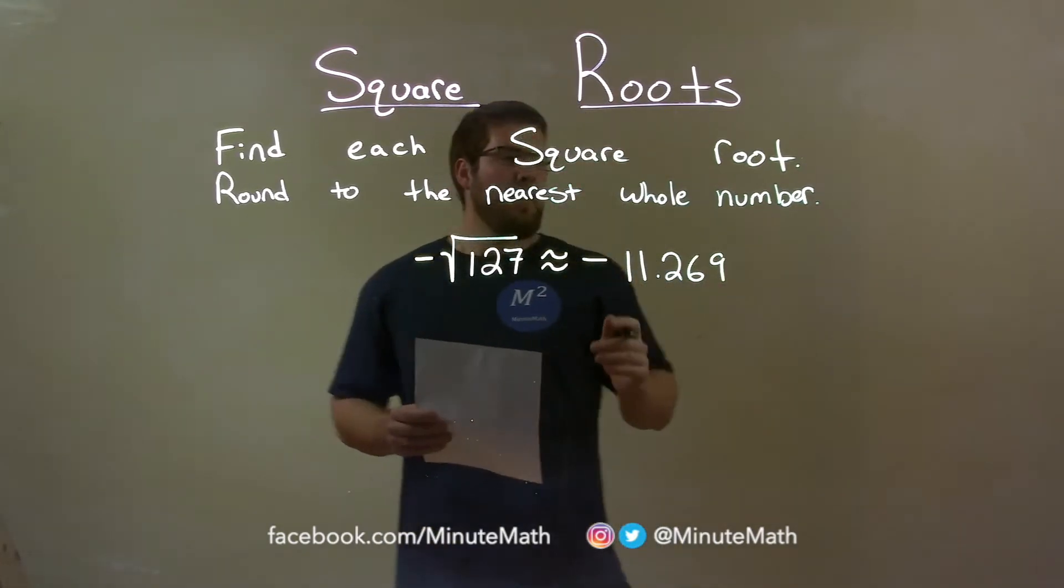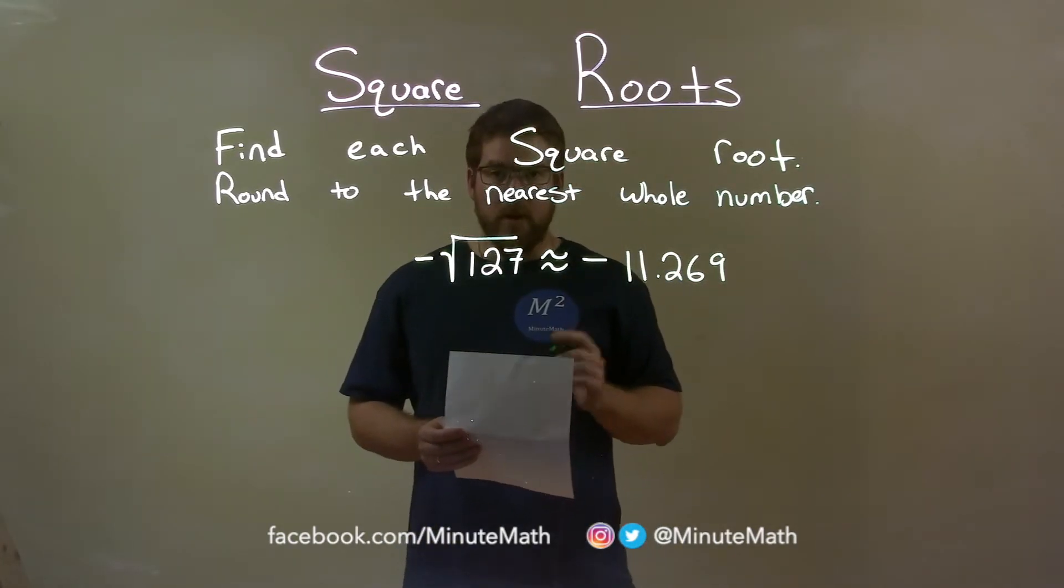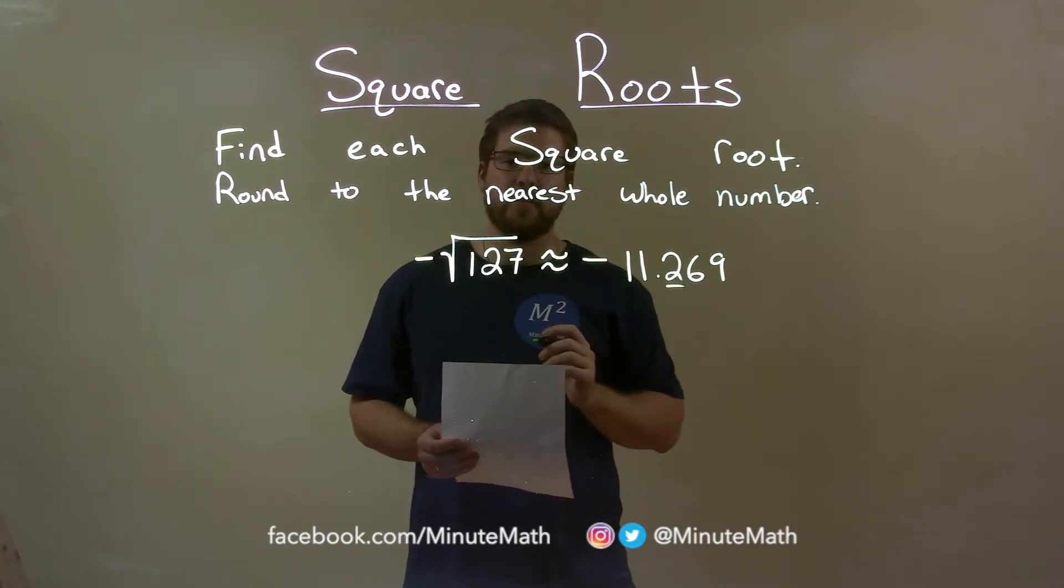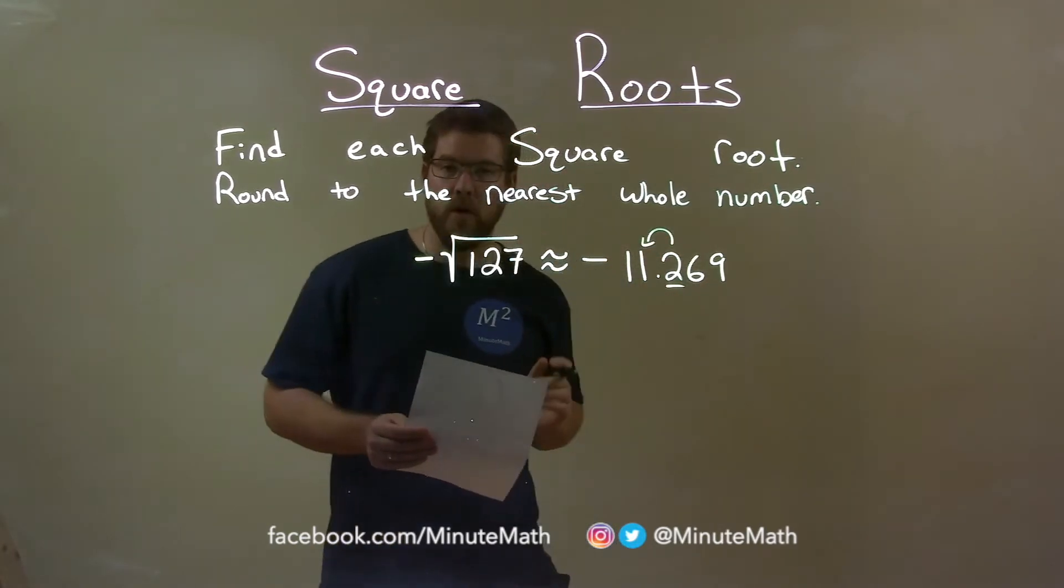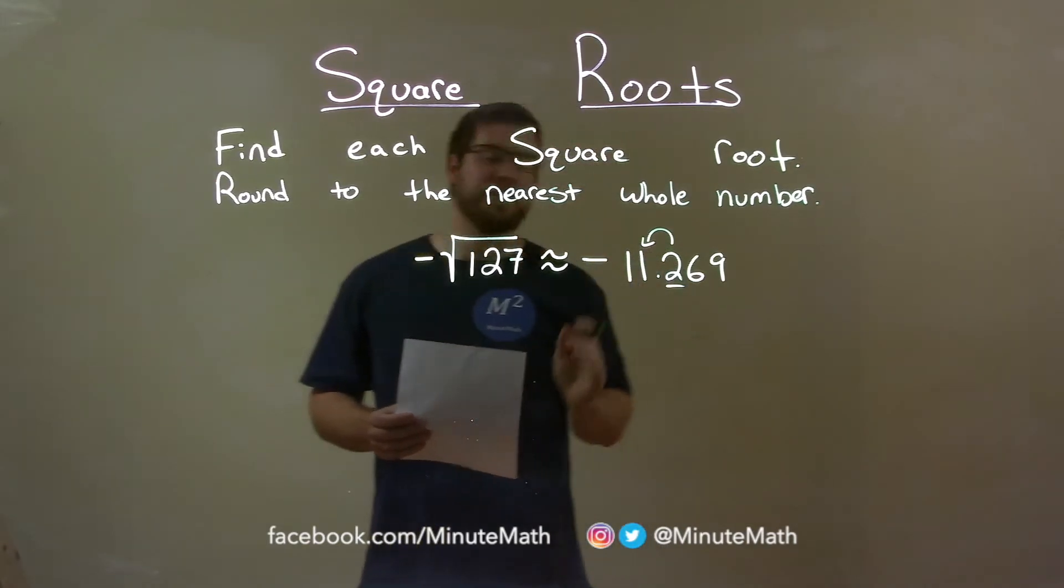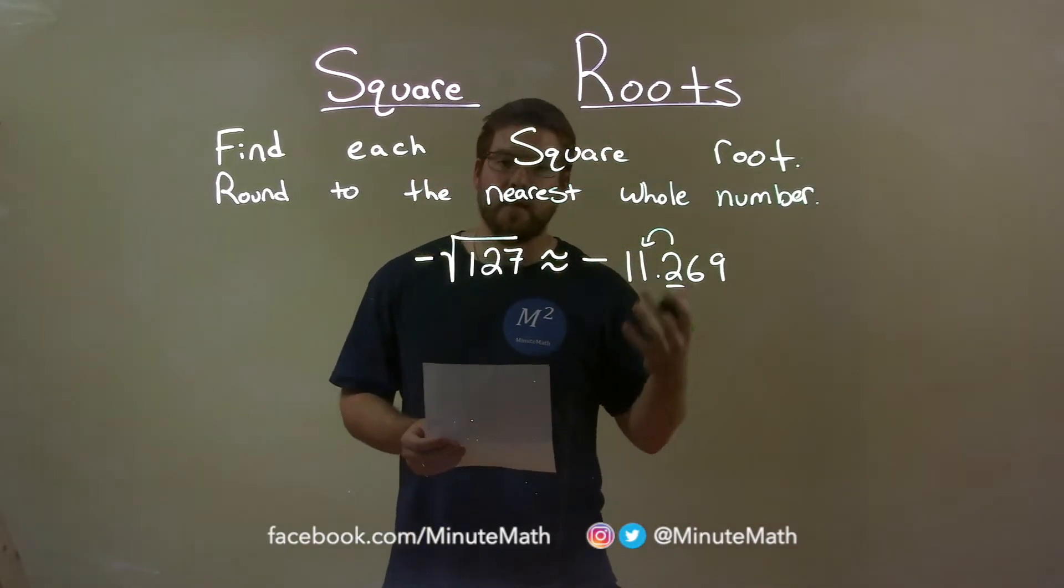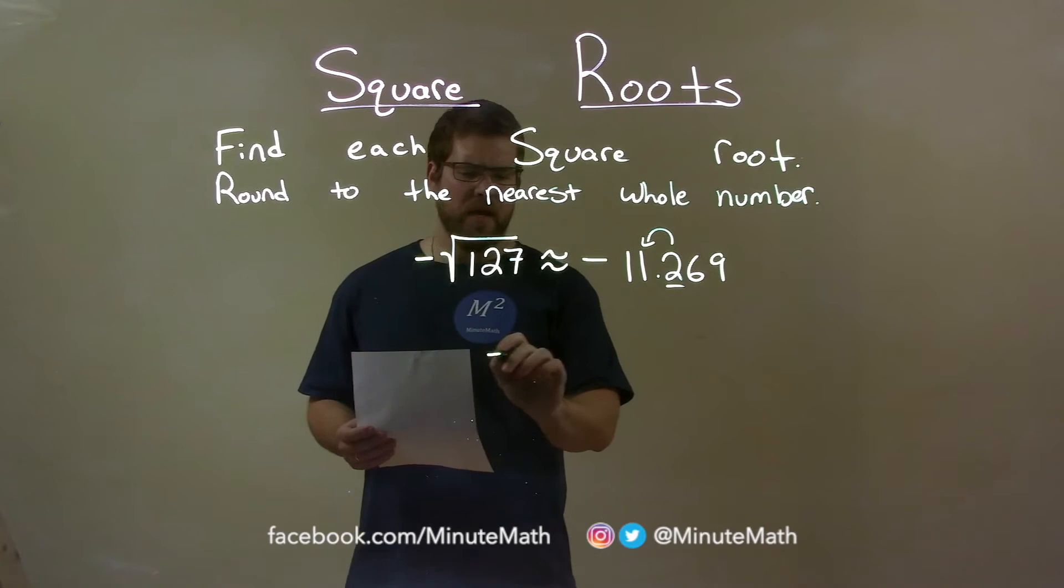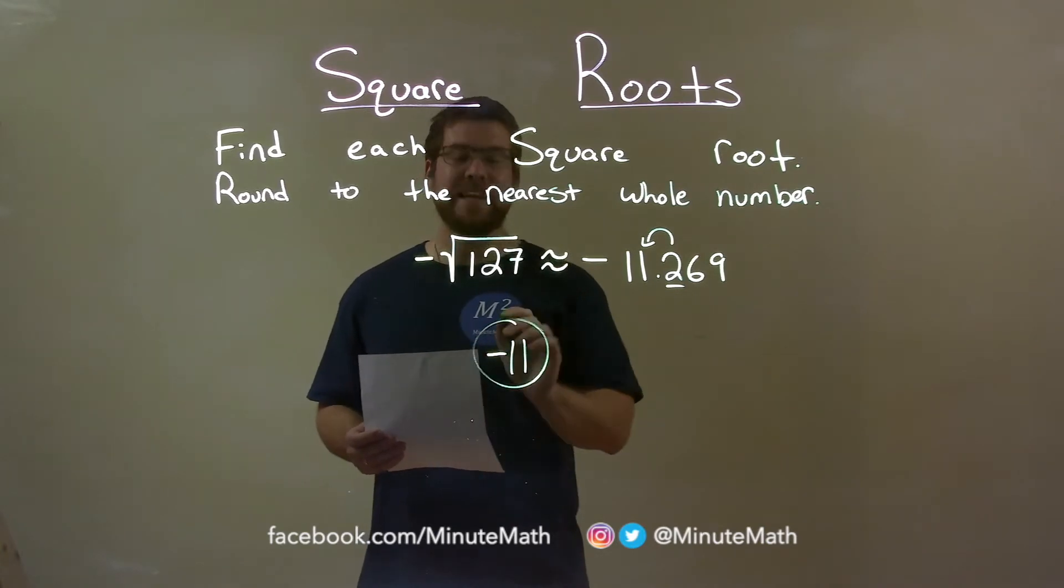Well, they tell us to round to the nearest whole number. So I look at the tenths position, and that causes an effect on the 1 right there. That makes the 1 stay where it is, or we keep it to an 11, or a negative 11. And so our final answer here is a negative 11.